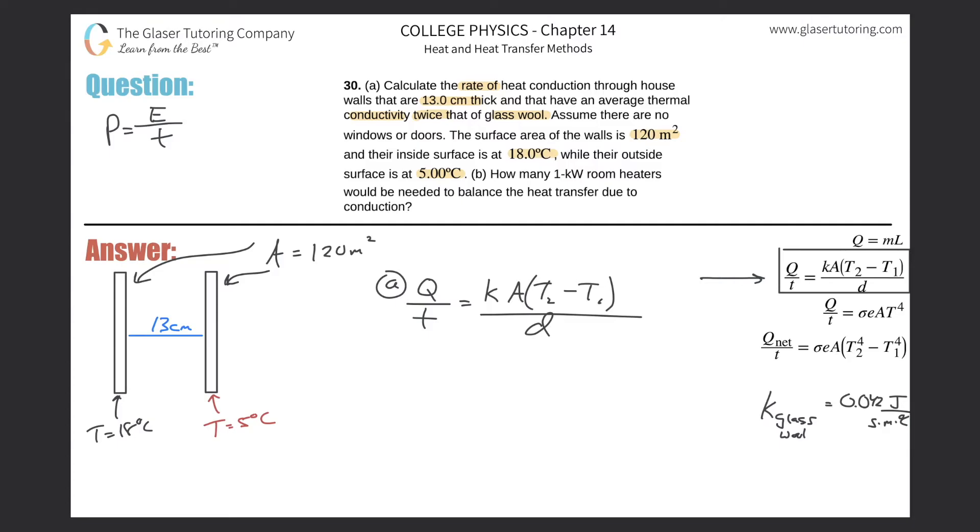I'm just going to plug a P here because I'm getting lazy, and now I'm going to calculate this. Here's glass wool that's looked up, but the thermal conductivity is twice that amount, so it's really two times 0.042. The surface area of the wall, they told us, was 120.